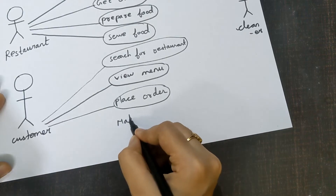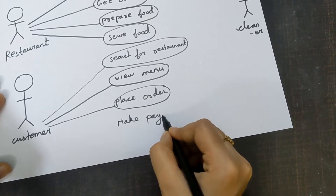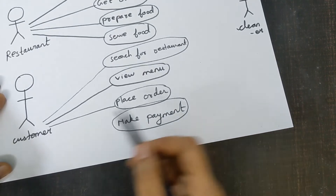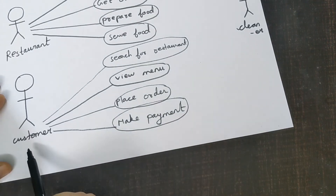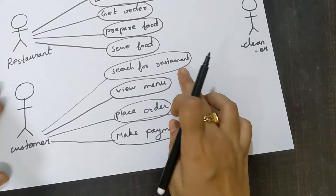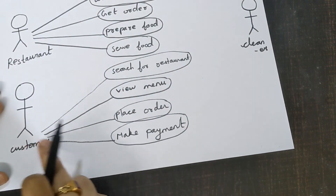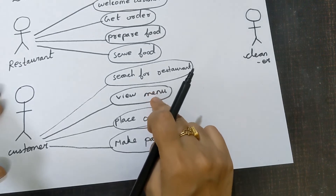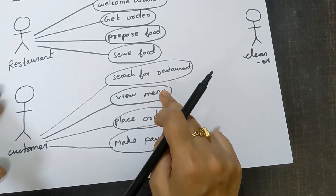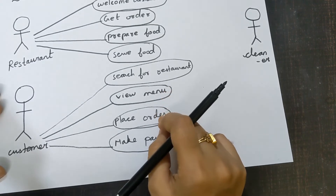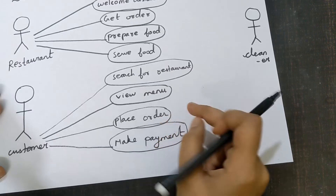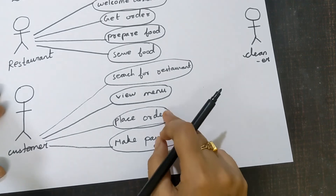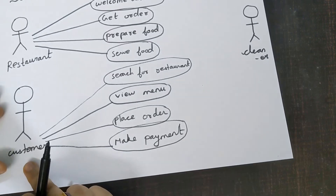Next, make payment. After ordering the food and eating, the customer needs to pay the amount for the food they have ordered — join customer and make payment using connector. So the use cases for the actor customer are: search for restaurant, view menu, place order, and make payment.